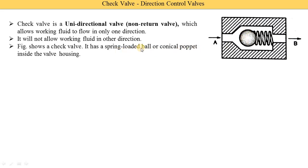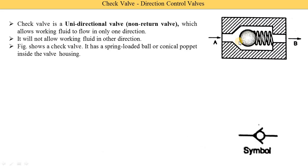Here you can see the spring-loaded ball. In this image, this is the spring, and at the end of the spring the ball is positioned — that is called a spring-loaded ball. The second type uses a conical poppet: instead of a ball, a conical-shaped poppet is used. That is the second type of check valve. Here we are looking at the spring-loaded ball type.